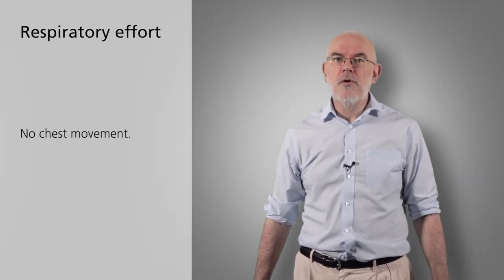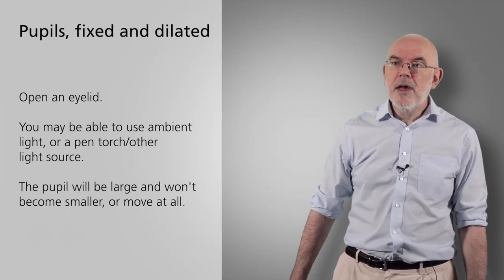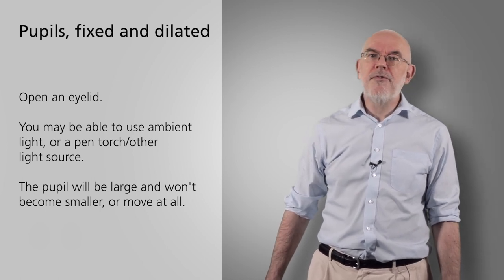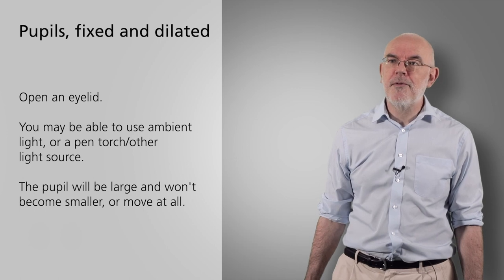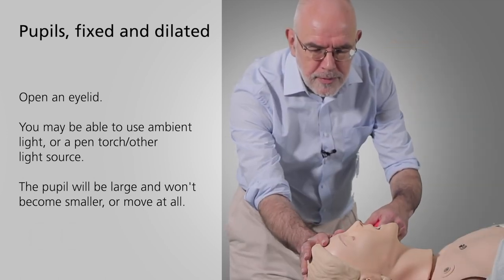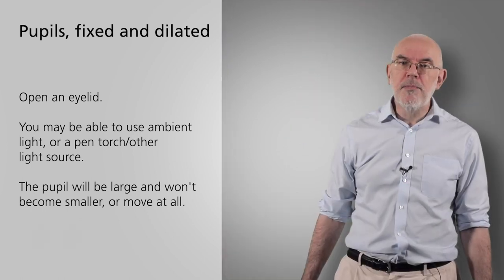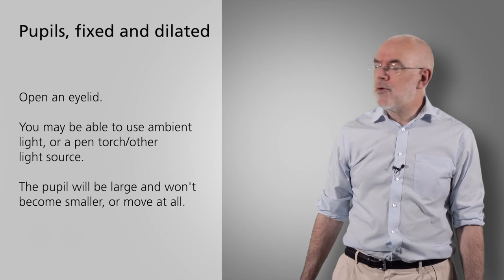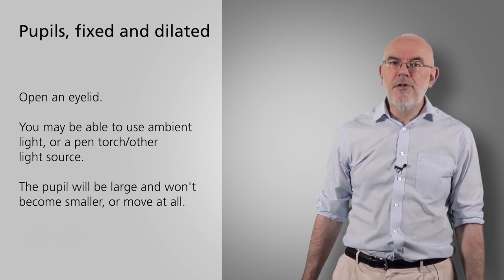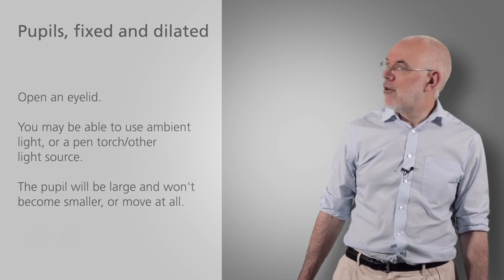For chest movement, use the same technique as taught in basic life support to establish that respiratory effort is absent. For fixed dilated pupils, open an eyelid — if there is good light, that should admit enough light to get a response if there is any. If not, use a pen torch or the light on your phone. The pupil will be large and won't constrict as you shine light into it. There is no need to do a gag reflex or corneal reflex — no legal requirement, and they don't look good.